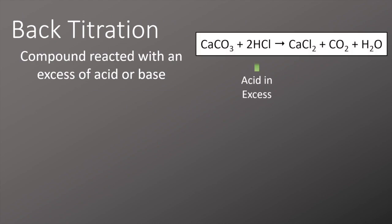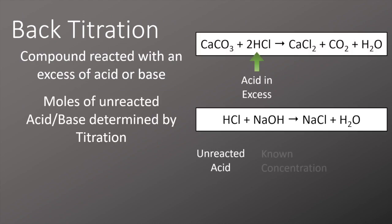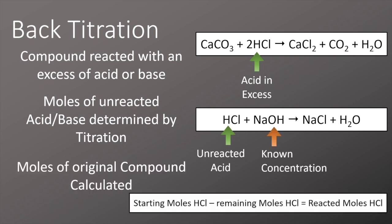In a back titration we first react an excess of acid or base with an unknown. We then calculate the remaining acid or base using a titration and then use this information to calculate how much of the unknown we had, often as a percentage purity calculation.